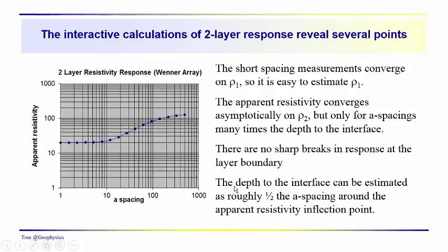Both the higher resistivity deeper layer and the near surface lower resistivity layer. And, you know, kind of lastly, of course there are other points that we can make, but lastly, the depth of the interface can be estimated as approximately one half the A spacing around the apparent resistivity inflection point.